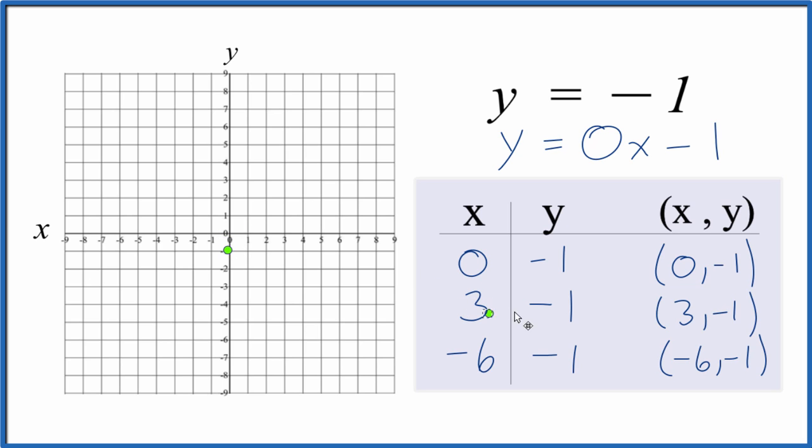If x is 3, y is negative 1. So we go to x is 3, y is negative 1. And you can see that any point is going to be on this horizontal line.